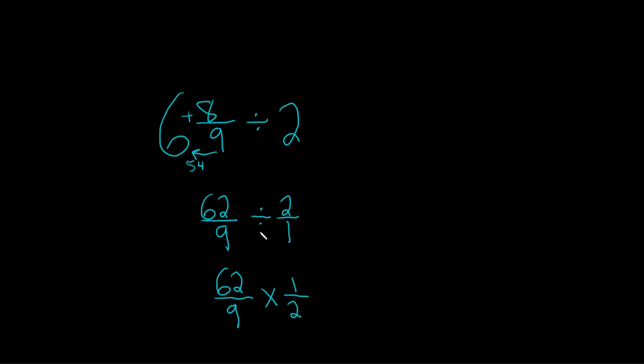Again, division is multiplication by the reciprocal. When we get to this point, we try to see if we can get any cancellation between the cross terms. Like the 9 and 1, nothing can happen here.